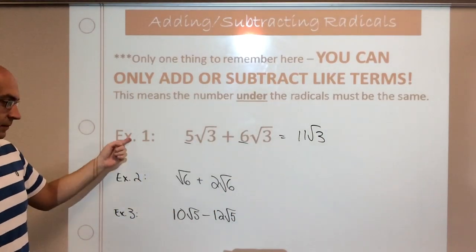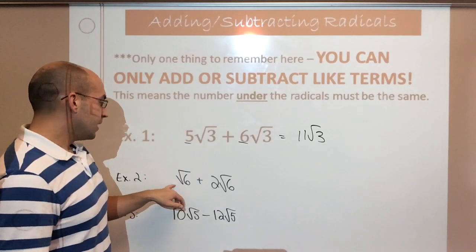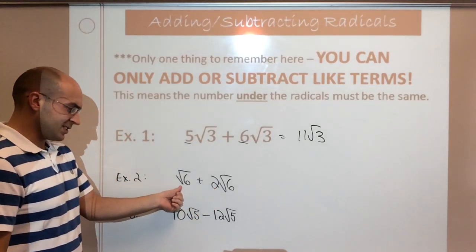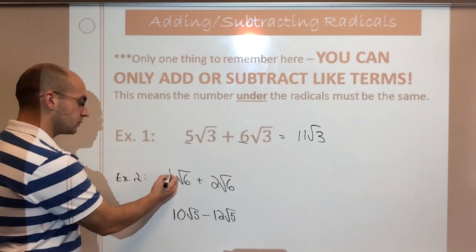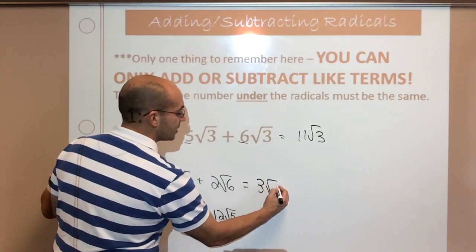Next example here. Root six plus two root six. Don't freak out. How many root sixes are here? One. So it's one root six plus two root six. I've got three root six here.